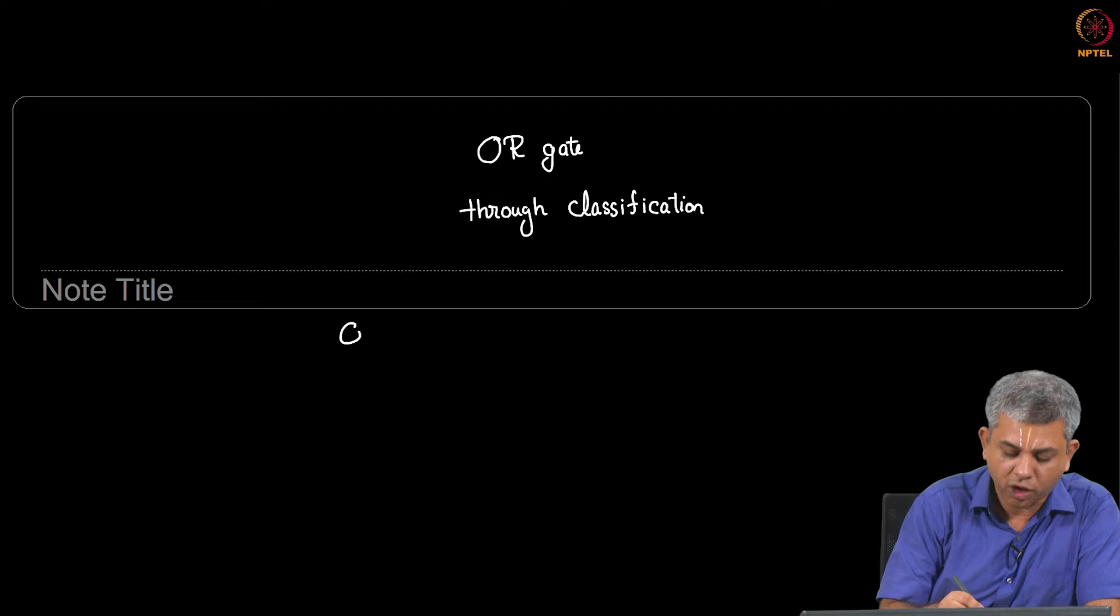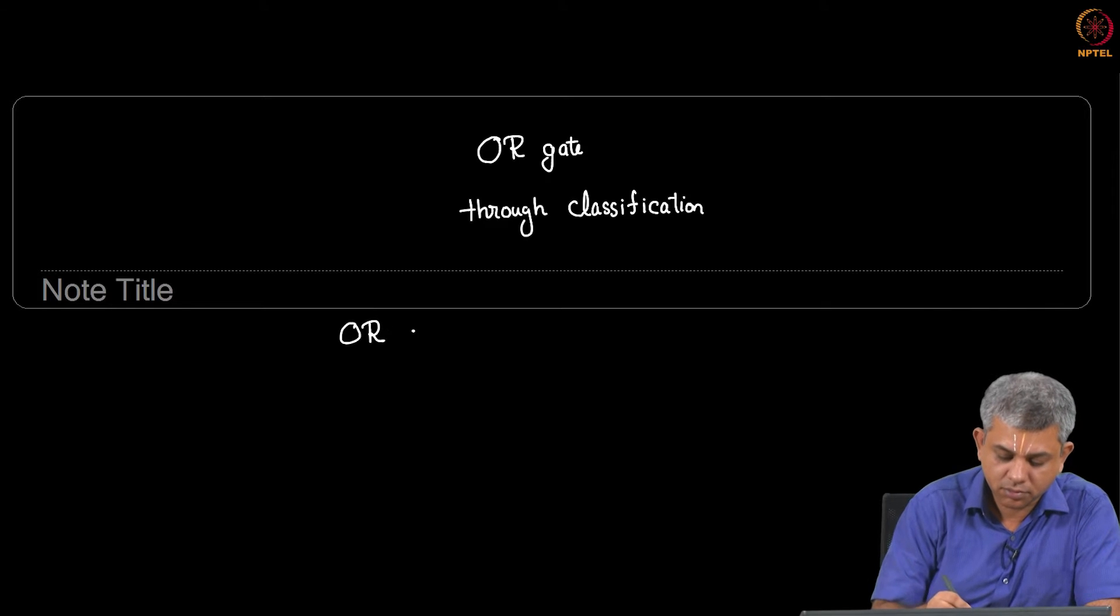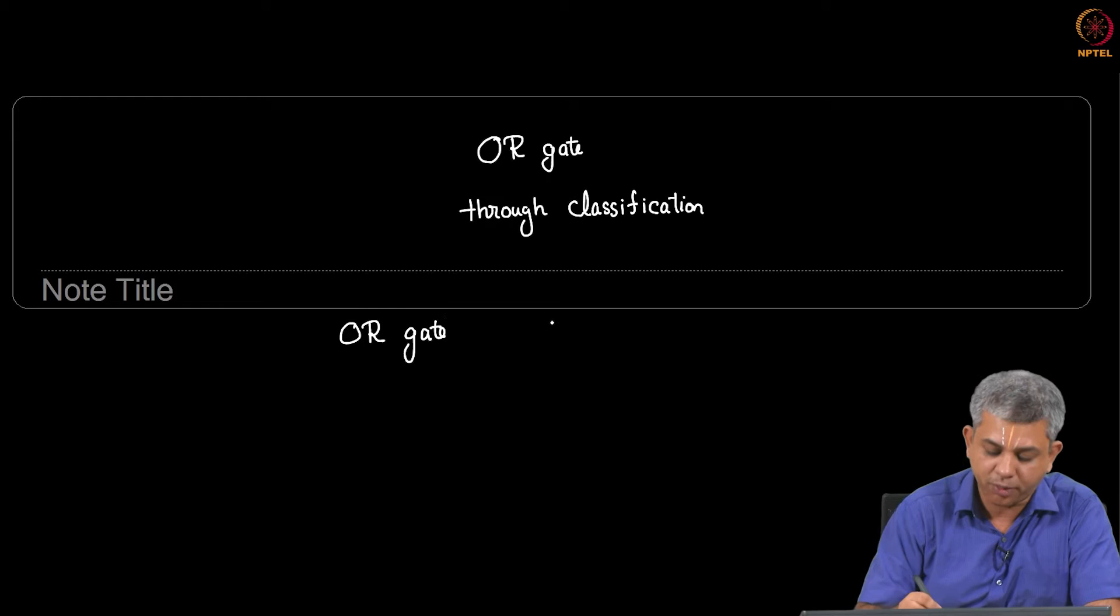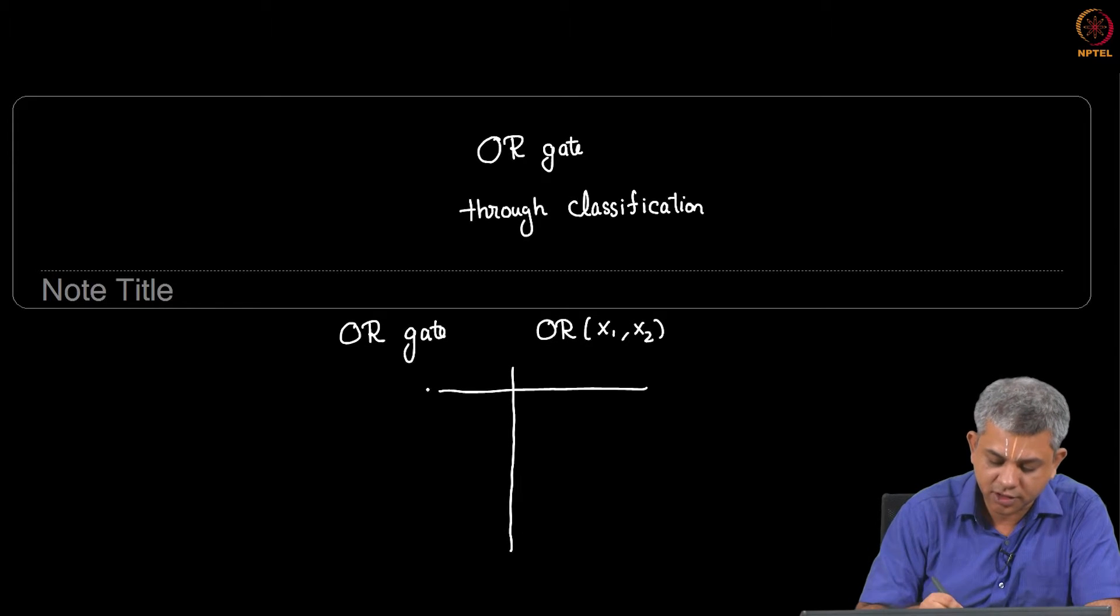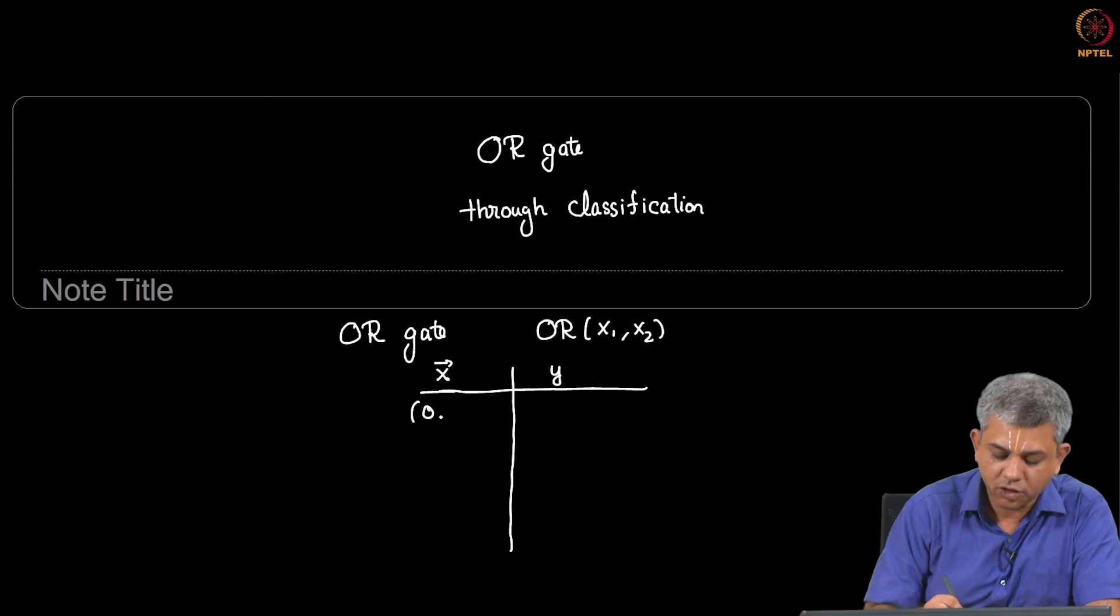We all know what the OR gate is. It takes in two inputs, let us call them X1 and X2, and X1 and X2 are always 0 or 1, so let us call this X vector. So 0 OR 0 gives you 0, 0 OR 1 gives you 1. So even if one of these two inputs is 1, we get a 1. This is a simple logic gate.